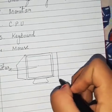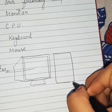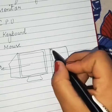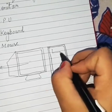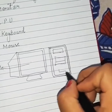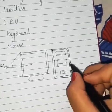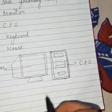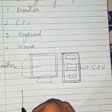The second one is CPU. CPU looks similar to a speaker. CPU is called the brain of the computer because whatever command we give to the computer, it is first accepted by the CPU, then it returns some message to the monitor. CPU stands for Central Processing Unit — it is the brain of the computer.